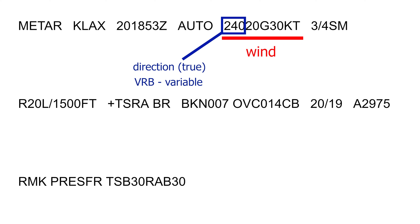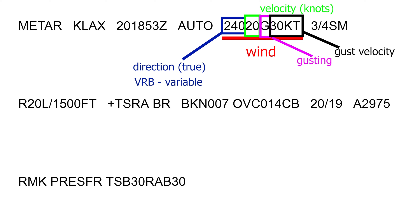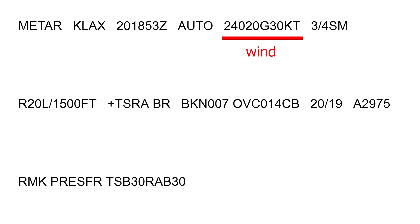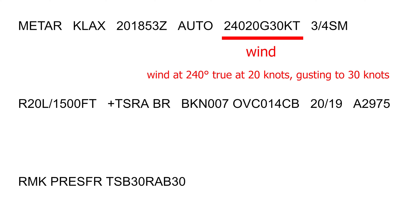The next two digits denote wind speed reported in knots. If the wind speed is greater than 99 knots, you will see three digits. If the wind is gusting, you will see the letter G, and the next two or three digits denote gust peak speed. So what we have here is wind at 240 degrees to true north, speed at 20 knots, gusting to 30 knots.